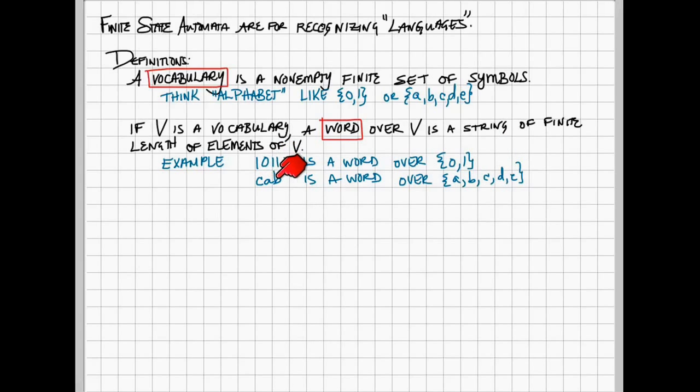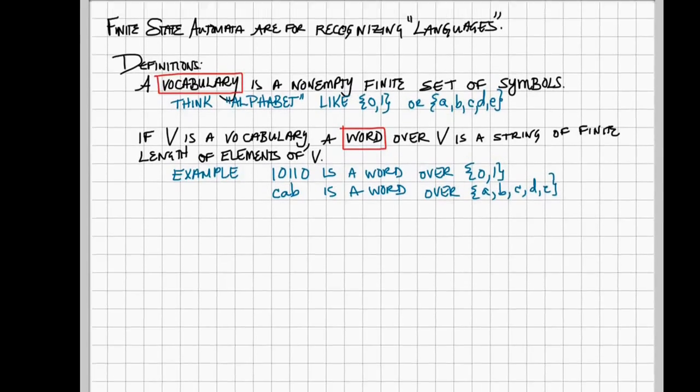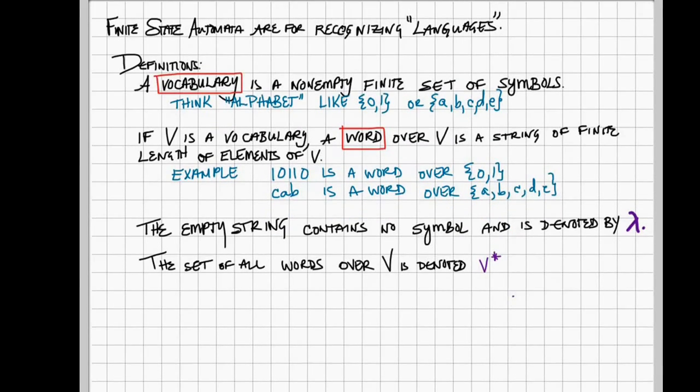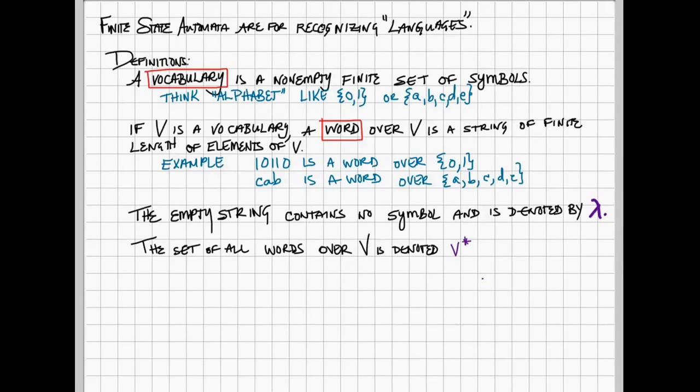And C, A, B - cab is a word over the vocabulary A, B, C, D, E. We will have an empty string just like we have an empty set. But the empty string gets denoted by lambda.